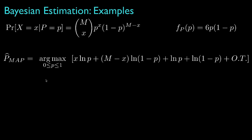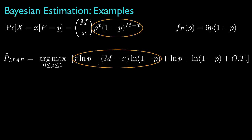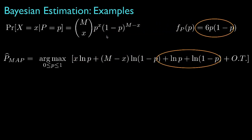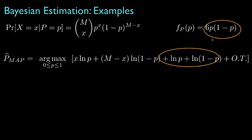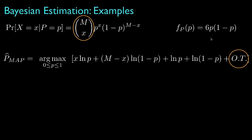For the MAP estimator, or the maximum of the posterior, we'll estimate the success probability as the value for the parameter P between 0 and 1 that maximizes the log likelihood. This log likelihood has terms that correspond to the conditional probability mass function for the observation, and also terms that correspond to the prior density for the parameter.